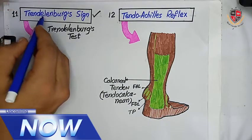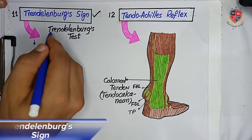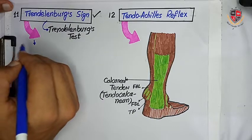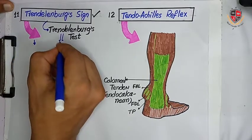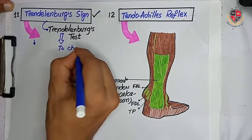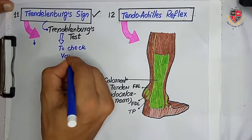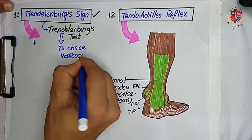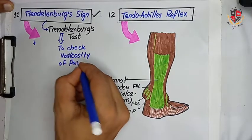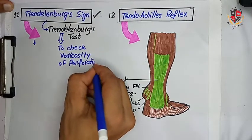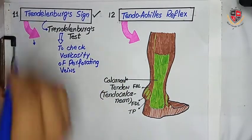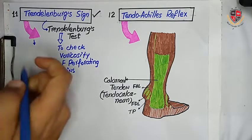The next clinical is Trendelenburg's sign. Trendelenburg's sign must not be confused with Trendelenburg's test. Trendelenburg's test is used to check the varicosity of superficial veins and perforating veins.